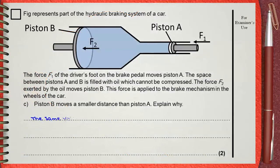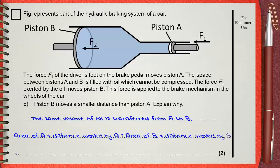Area of A times distance moved by A equals area of B times distance moved by B. So, the distance moved by B is smaller.